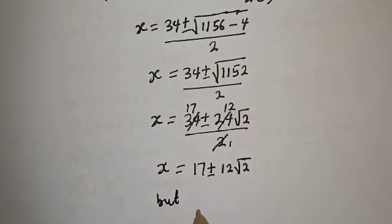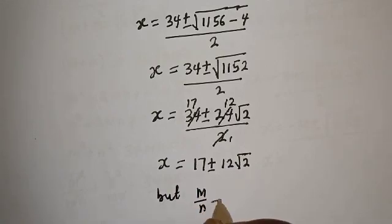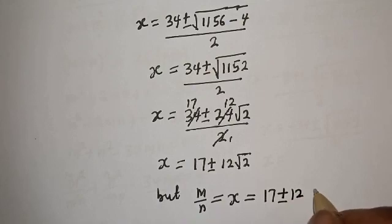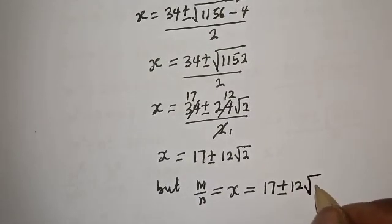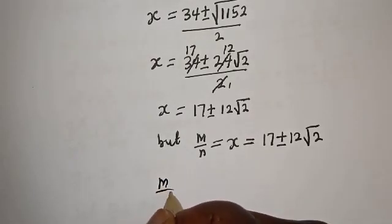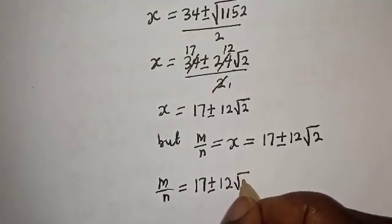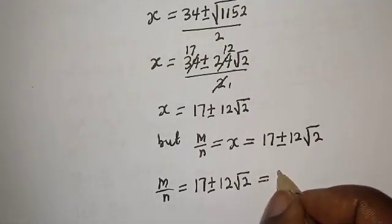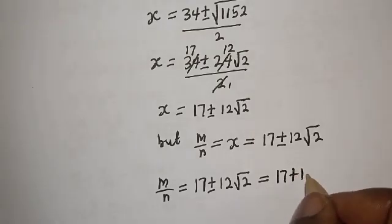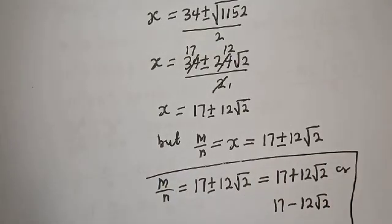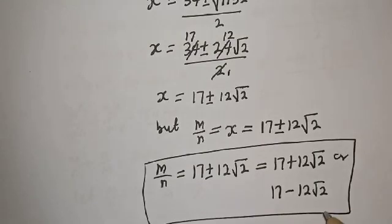Recalling that m over n equals s, therefore m over n equals 17 plus or minus 12 root 2. This gives us m over n equals 17 plus 12 root 2, or 17 minus 12 root 2. This is the final answer. If you enjoyed the class, please don't forget to like, share, comment, and subscribe. Thank you.